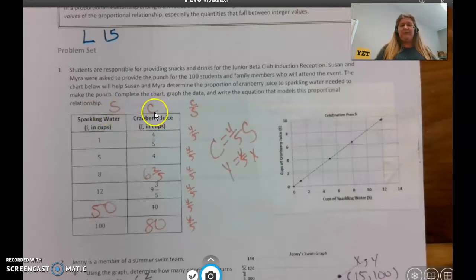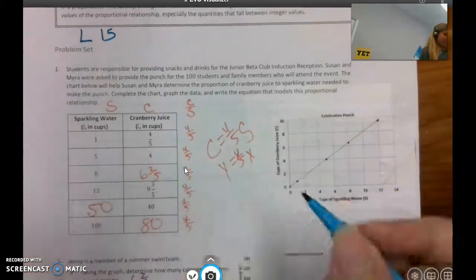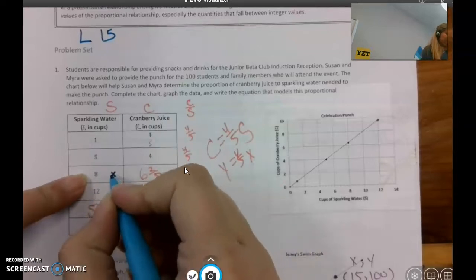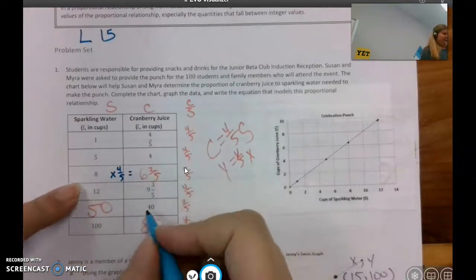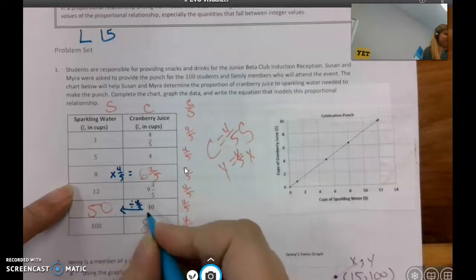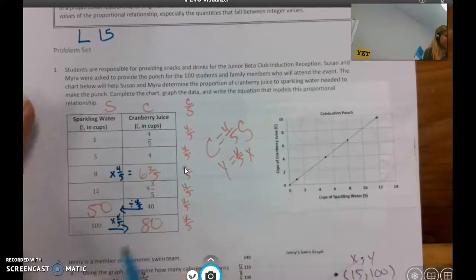I decided to use S and C, and so I'm going to do C divided by S to find the unit rate. The unit rate was 4/5 and that was consistent. I used this unit rate to find this value, so I did 8 times 4/5 to get 6 and 2/5, and then here if I was going backwards I would actually divide by 4/5, so 40 divided by 4/5 gave me 50.